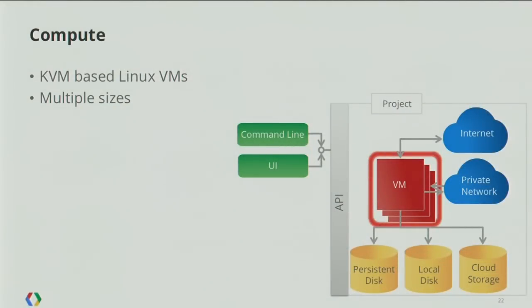Let's get into a little bit more detail about the technology. I'll walk through the stack, starting with compute. These are KVM-based virtual machines — we're running on the KVM hypervisor, and we've worked closely with Red Hat to get to a point where we have a very secure, highly performant, high-consistency environment. These virtual machines are available in multiple sizes: one, two, four, and eight cores, and they come with 3.75 gigabytes of RAM per core. Our smallest virtual machines are actually quite a lot bigger than the smallest you'll see elsewhere.